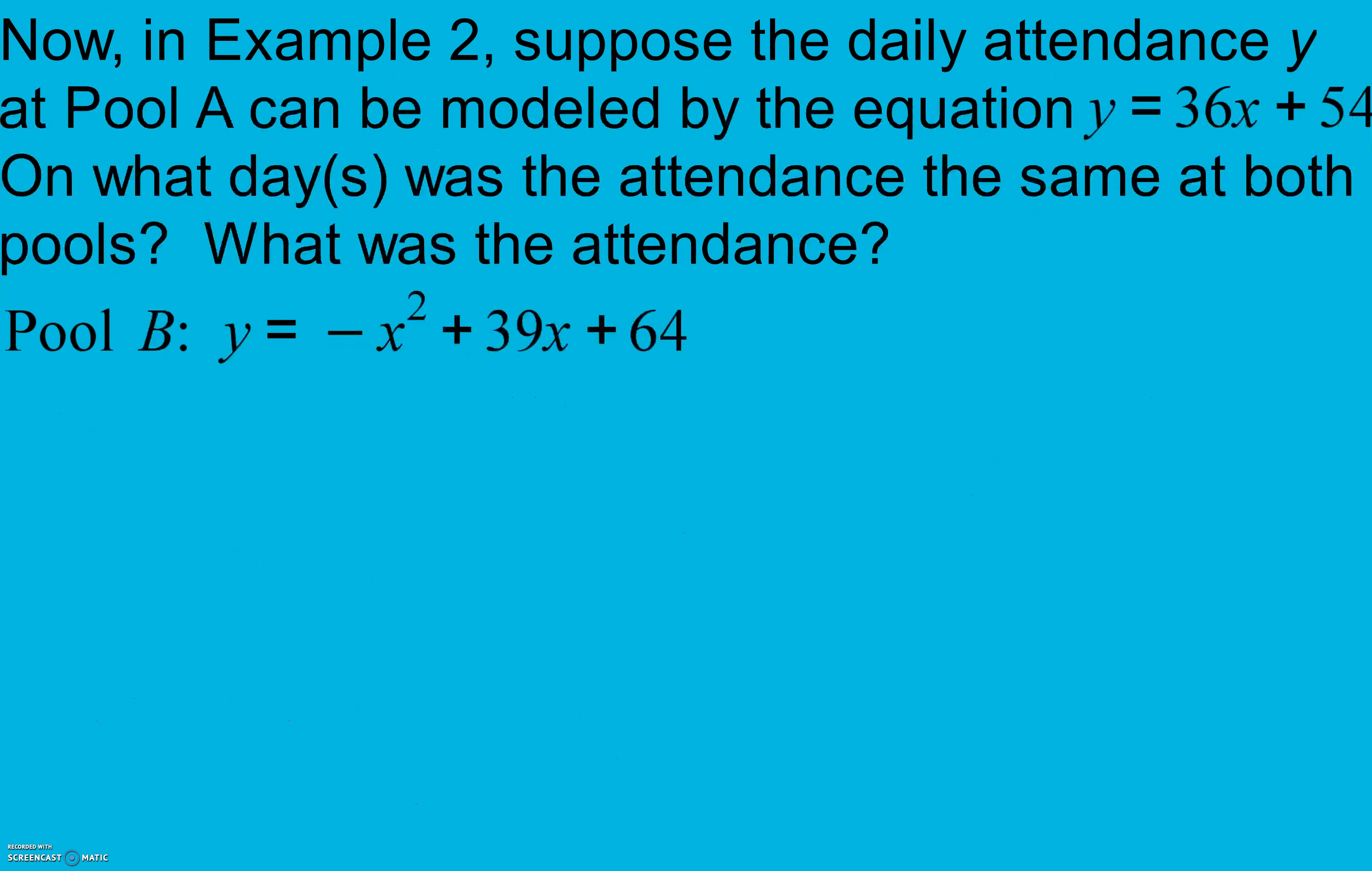Now, in example two, suppose the daily attendance at pool A was modeled by the equation Y equals 36X plus 54. On what days was the attendance the same, and what was the attendance? So here again, I need opposites before I can use elimination. So I'm going to multiply my entire second equation by negative 1. And when I do that, I then can add. And I get 0 equals negative X squared plus 3X plus 10. And if we wanted to from here, we could go right into the quadratic formula.